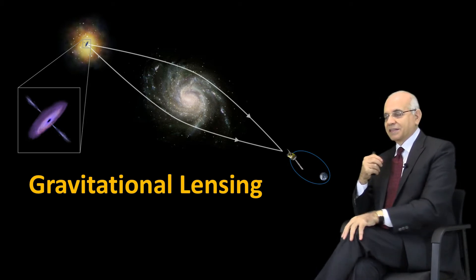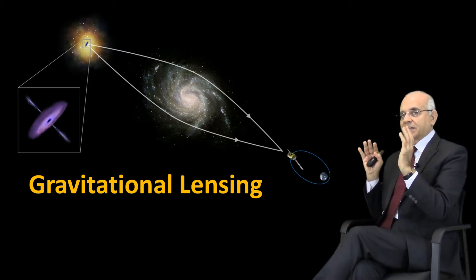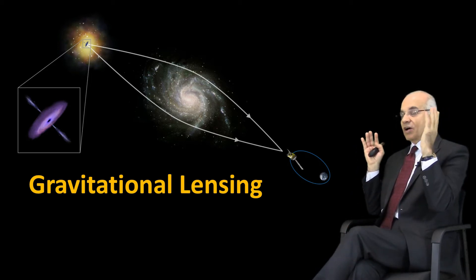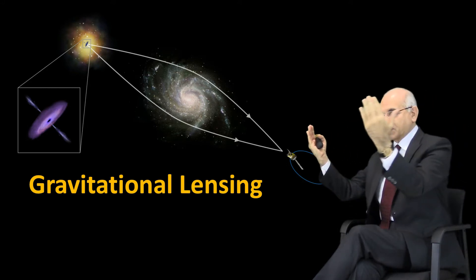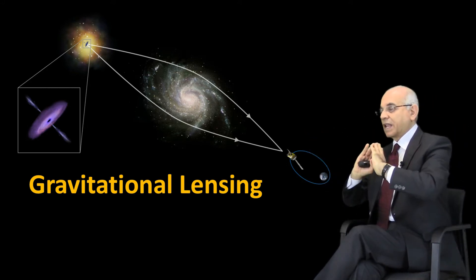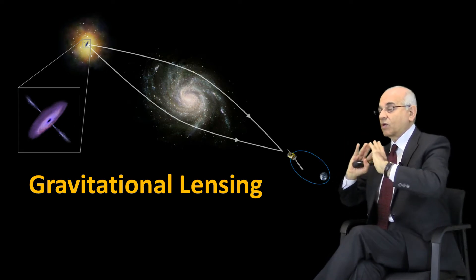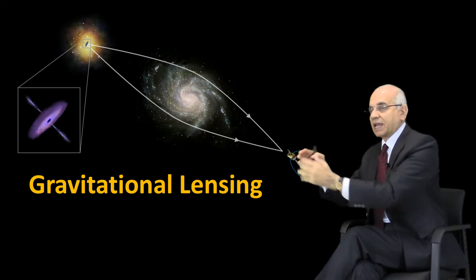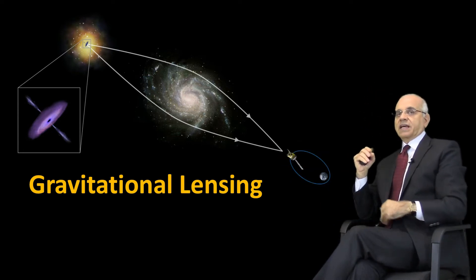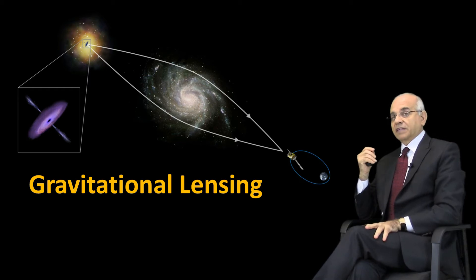We were able to actually detect these stars behind our galaxy because of gravitational lensing, which means space was curved. So light curved along space and went right around the galaxy and came to our satellites in space to find and identify it. That is incredible.